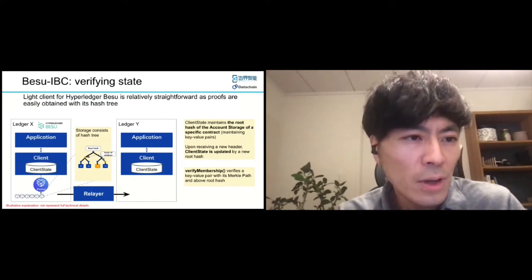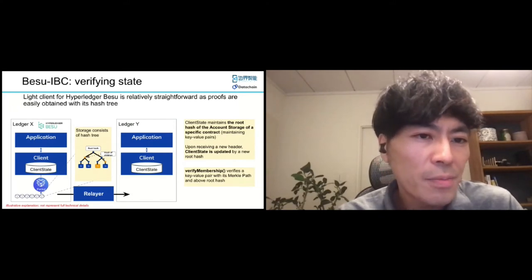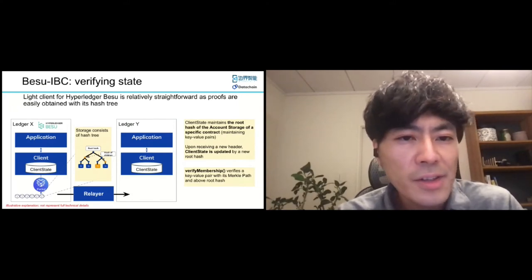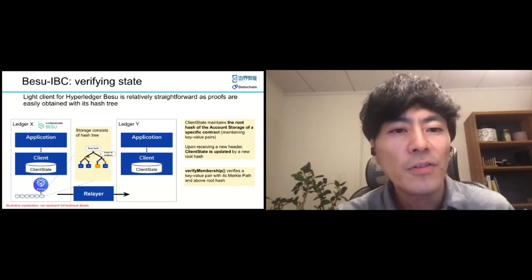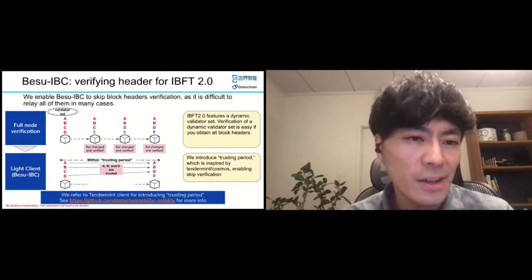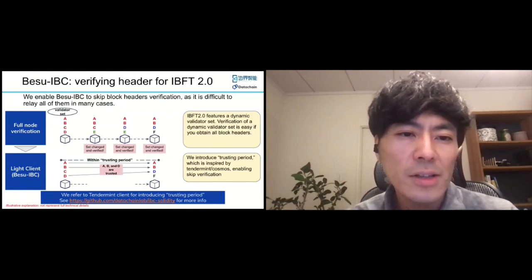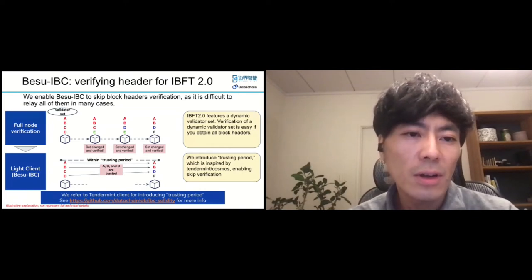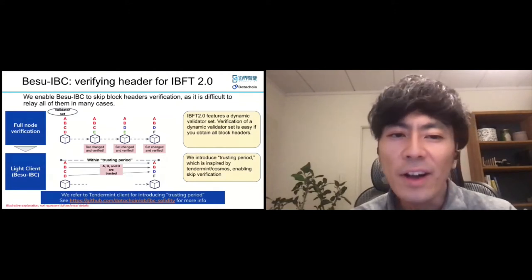The IBFT2 Besu consensus algorithm features a dynamic validator set, so we also need to verify it. In BaseIBC, a validator set is verified in CheckHeader. In a full node case, verification of such a dynamic set is easy — you can verify a newly elected validator by checking the approval of the last validator sets. However, this is not the case for inter-blockchain communication, as typically not all block headers are presented.